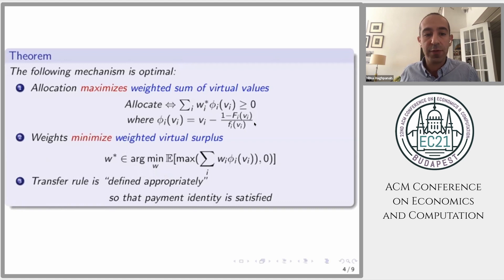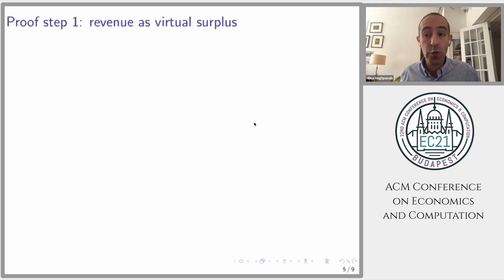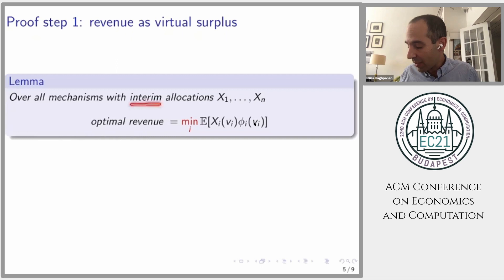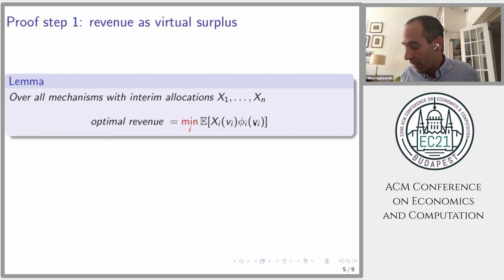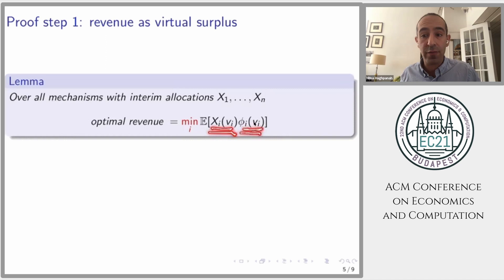Let me give you some idea of how we prove this result in two steps. The first step is more or less standard: write down revenue in terms of the virtual surplus of a given allocation rule. The lemma is as follows. Given a mechanism with interim allocation rules X1 to Xn, you can write down optimal revenue just in terms of this allocation, eliminating the payment rule. X_i(v_i) specifies the probability that the software is sold when agent i's value is v_i. Revenue equals the minimum over all agents of their expected virtual surplus: E[φ_i(v_i) · X_i(v_i)].